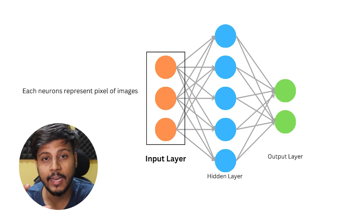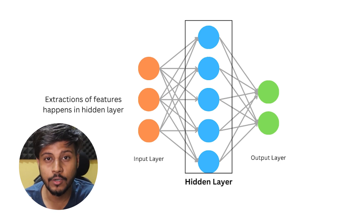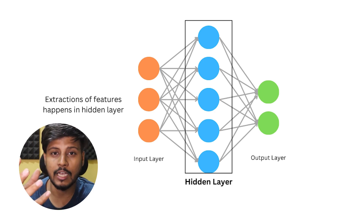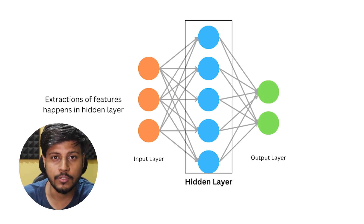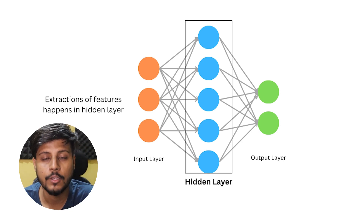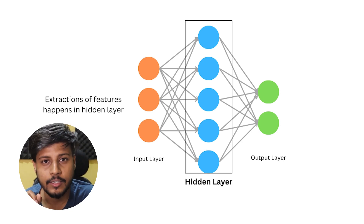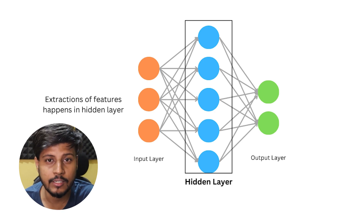Then we have the hidden layer, which comes after the input layer — this is where computation happens. Here you are going to extract information, extract features, build patterns, and build recognitions. All of these things happen in the hidden layers, and it is very important to have them.